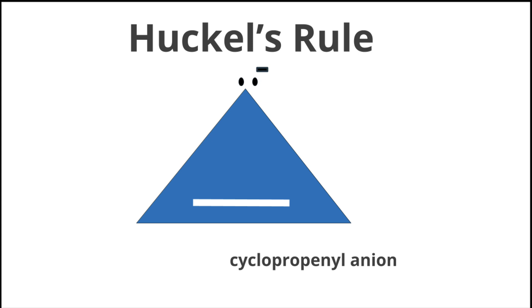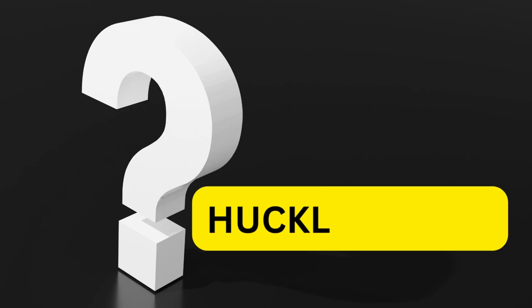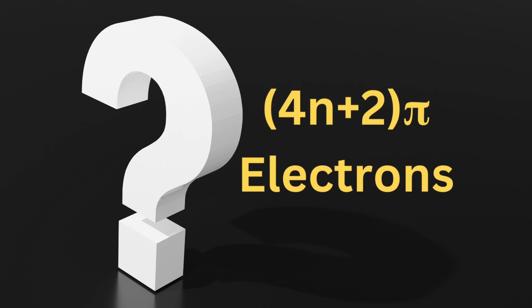First let us see what is Huckel's rule. Huckel's rule helps to identify a compound whether it is aromatic or non-aromatic. If there is the presence of 4n plus 2 pi electrons then the compound must possess aromaticity.